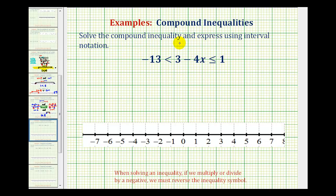We want to solve the compound inequality and then express the solution using interval notation. Looking at our compound inequality, notice how it looks like we have two inequalities combined together. When written in this form, this represents two inequalities connected by and.